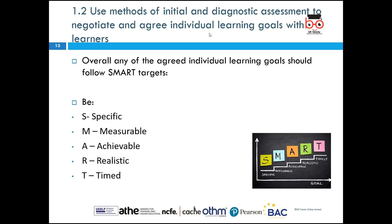Whatever goals you agree on, they should still follow SMART — Specific, Measurable, Achievable, Realistic, and Timed. If you give a student a six-week schedule, that's too long and they'll ignore it. If you say two weeks, they'll know they need to get on with it. Don't be too tight or too loose with your timing. Normally I give students two weeks to submit assignments, but I adapt in accordance to what your student can do.